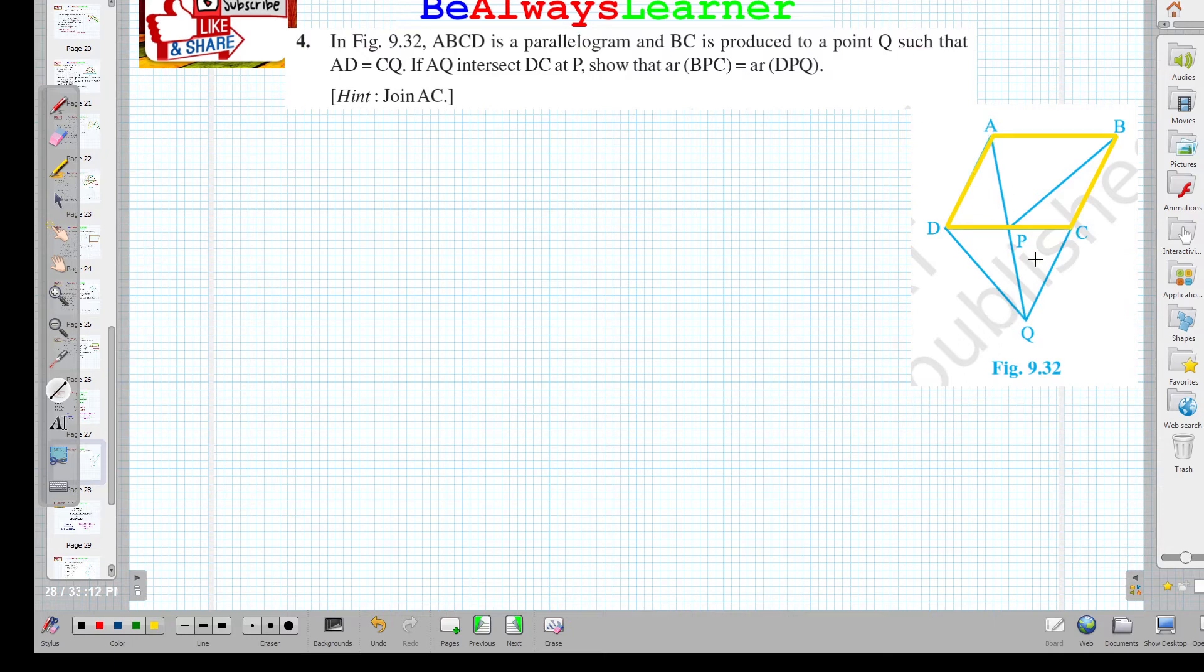AQ intersects DC at P and we need to show that triangle BPC, the red triangle, has area equal to triangle DPQ. We need to show these two triangles have equal area.